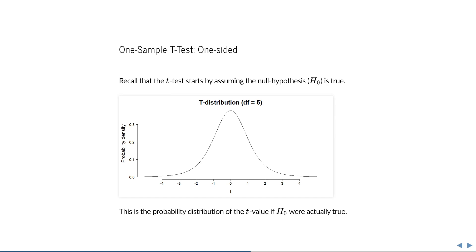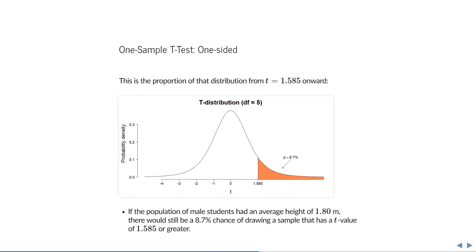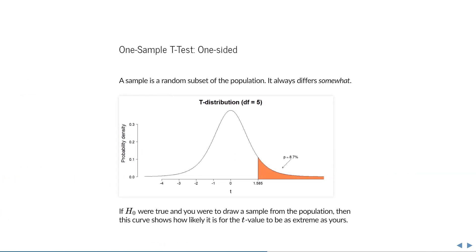I've chosen 5 degrees of freedom here because we had 6 observations, and we calculated one value — namely the sample mean — and then 5 degrees of freedom are left. The proportion of this t-distribution from our calculated t-value onwards then gives us the p-value. This is the surface area under this distribution, and it turns out to be 8.7%. What that means is that even if the population of male students had an average height of 1.8 meters, there would still be an 8.7% chance of drawing a sample that yields a t-value of this large or even larger.